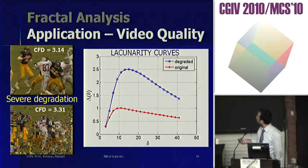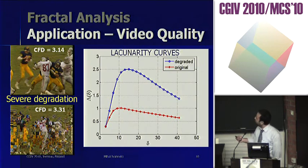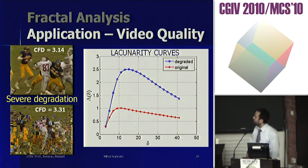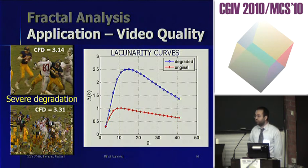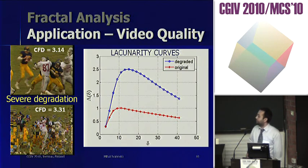You can see an original video frame from the football standard test sequence and the corresponding degraded video frame received at the destination. The color fractal dimension for the original image was 3.14, and for the degraded one it is 3.31 — an increase in complexity due to degradation. For the lacunarity curves, the red curve corresponds to the original image and the blue curve is higher, indicating a more lacunar image, again due to degradation.